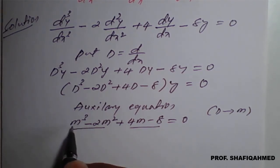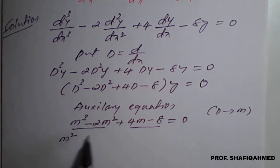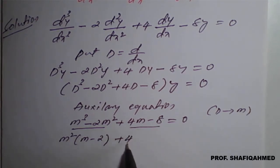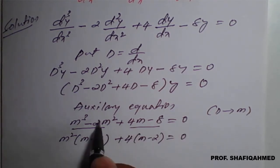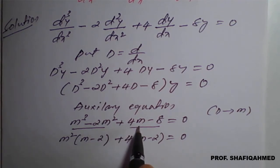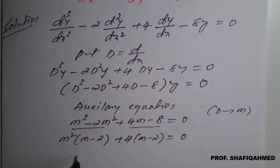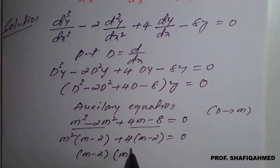From the first pair, take m² common, giving m²(m − 2). From the second pair, take 4 common, giving 4(m − 2). Now (m − 2) is common in both, so factoring: (m − 2)(m² + 4) equals 0.